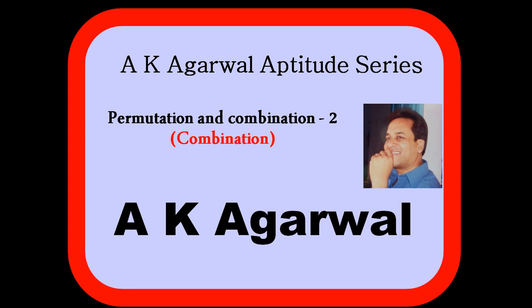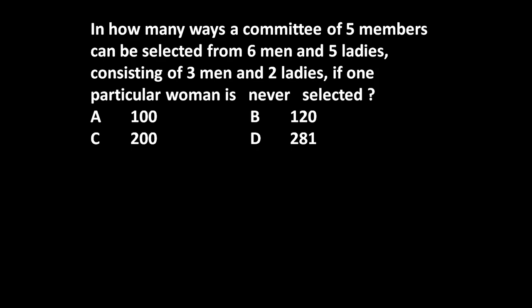Hello friends and welcome to the AK Agrawal Latitude Series. In this session we are going to learn a technique for solving a problem on permutation and combination. The given problem is: in how many ways can a committee of five members be selected from six men and five ladies, consisting of three men and two ladies?